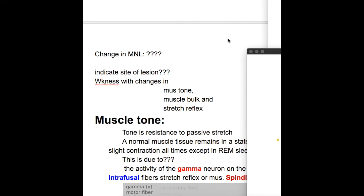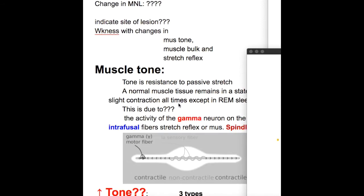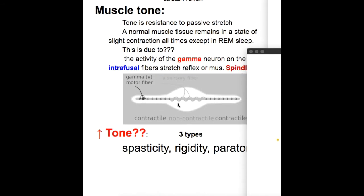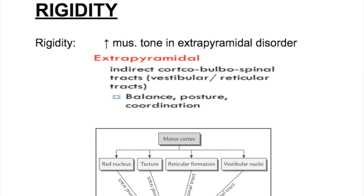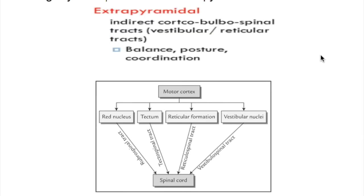This video will discuss rigidity as changes in the motor neuronal lesion, which include weakness with changes in muscle tone, muscle bulk, and stretch reflex. In muscle tone, we have three types of hypertonia: spasticity, rigidity, and paratonia. In this video we will discuss rigidity, its causes, and the structures involved that cause rigidity.